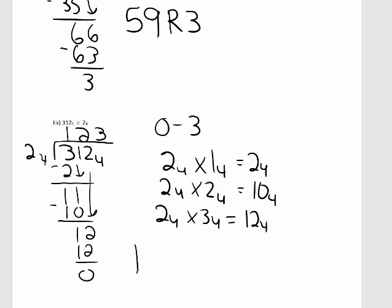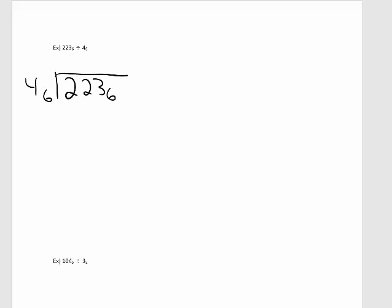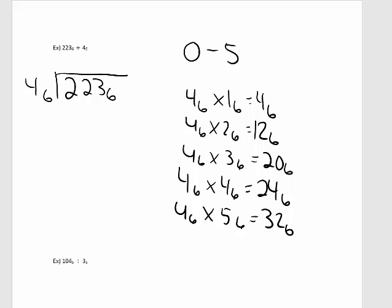So our answer here is 123 base 4. Now let's take a look at an example that is in base 6. First I want to write the long division. Because we're in base 6, the numbers are 0 through 5. I want to take the multiples of 4 base 6 with every value that is in base 6. Let's go through these: 4 times 1 is 4.